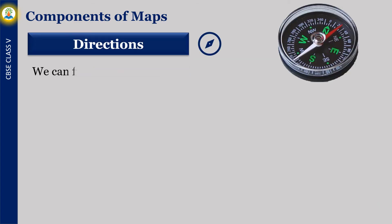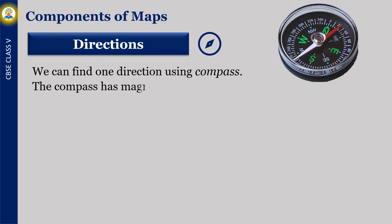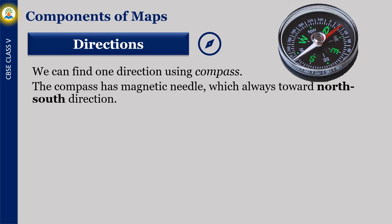We can find direction using a compass. The compass has a magnetic needle which always points toward the north-south direction. Please study a map of India to find the directions indicated.